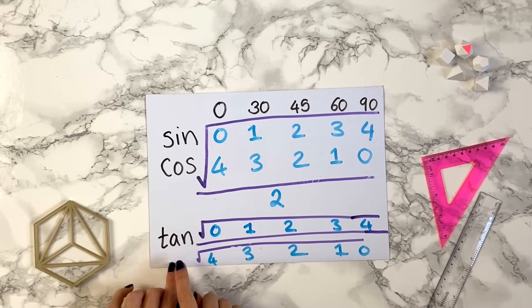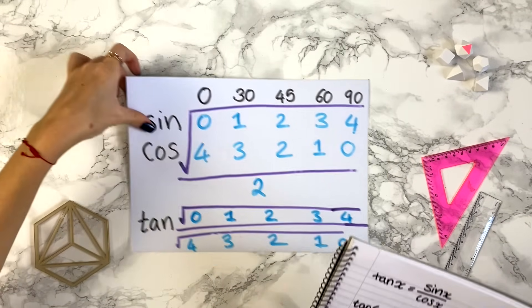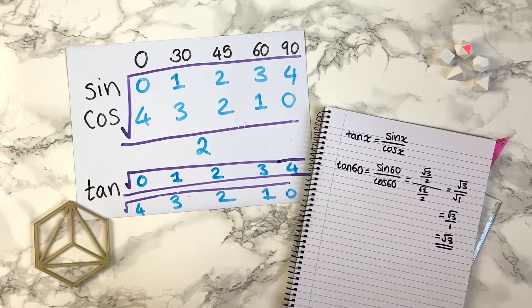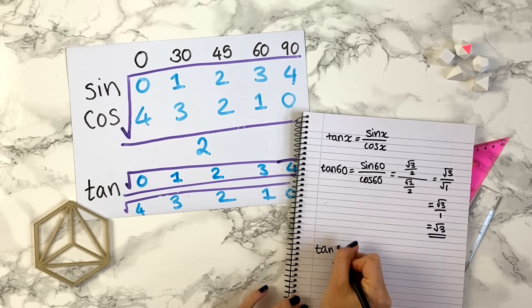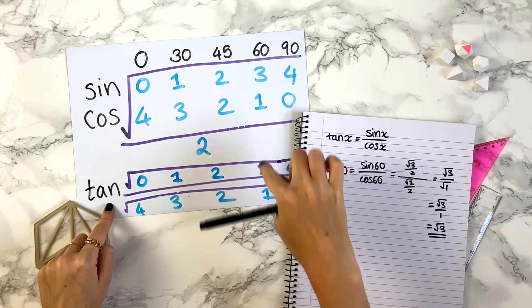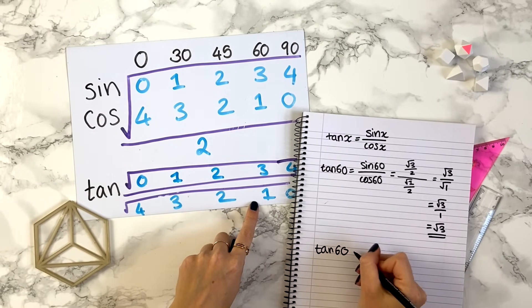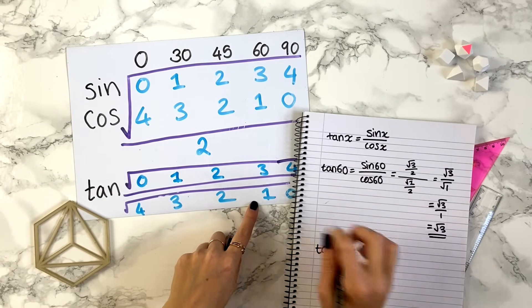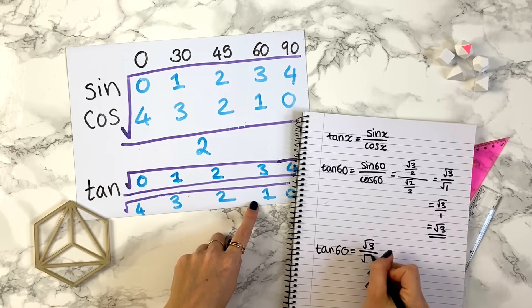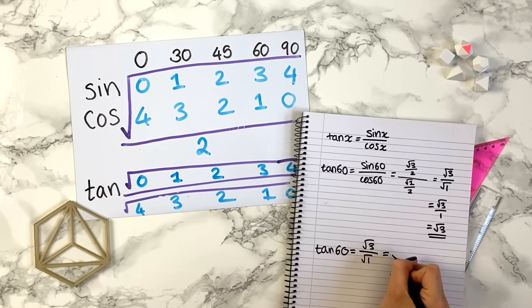Using this, you can then find tan values directly. So for instance, if you want to find tan 60 again, you can say that tan 60 is when you look tan 60, you have the square root of 3 divided by the square root of 1, which gives us our root 3.